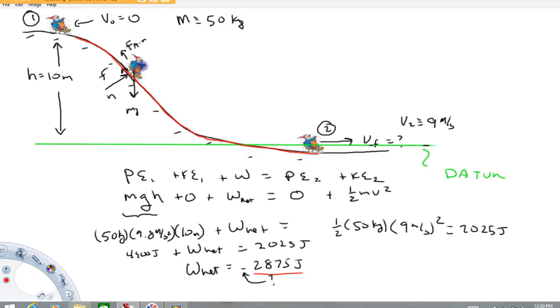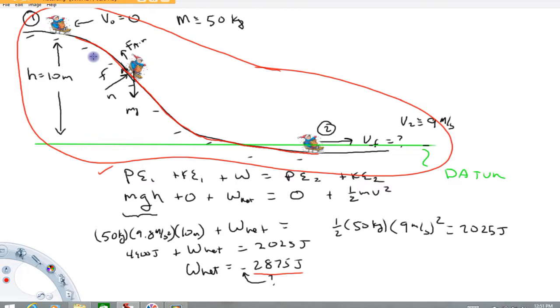Now whether energy is conserved or not depends on how the system is defined. The way I defined it when I wrote the equation, energy was not conserved because we had an external force doing work. If I define my system as everything including the surrounding air and the snow in the surface, energy is conserved for that system because that's basically where it went. This 2875 joules is basically now can be seen or thought of as an increase in temperature of the snow along the surface and an increase in temperature in the air around the child.